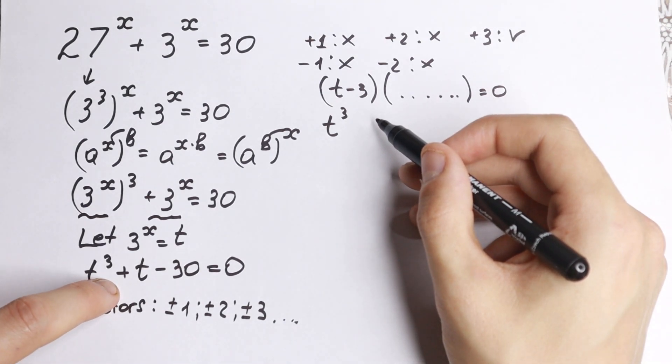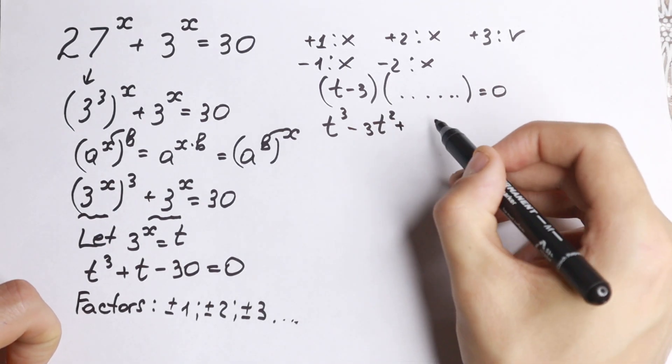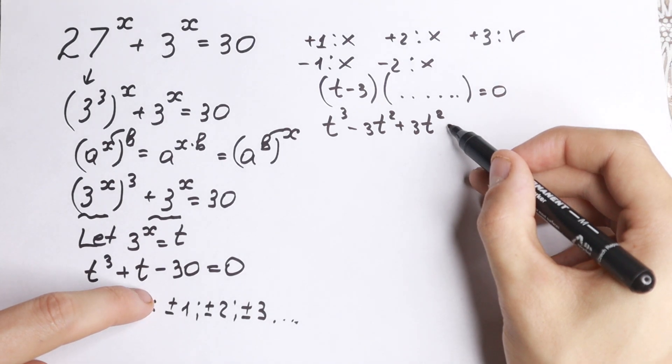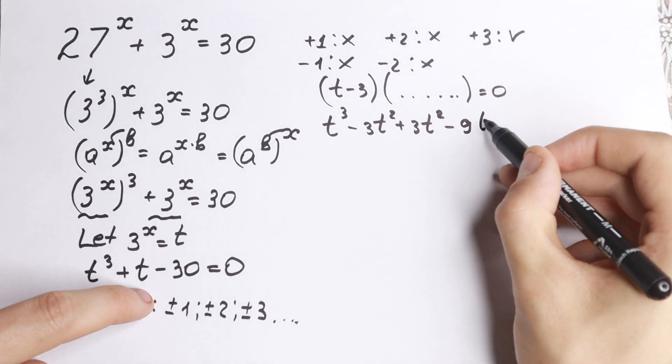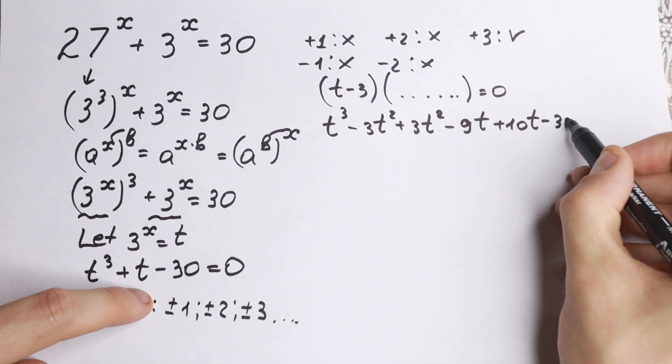And I want to factor t minus 3. So I write minus 3t square and plus 3t square. I have t, so I want to factor t minus 3.